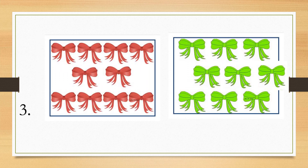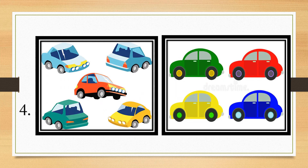Number 3 — adunay diri mga ribbons or laso. Palihug tan-awa kung asa'y mas labaw o gusa, butangi og check; ang mas jutay o gusa, butangi og X. Okay, very good. Number 4 — adunay diri mga auto-auto. Butangi og check ang mas labaw o gusa; butangi og X ang mas jutay.